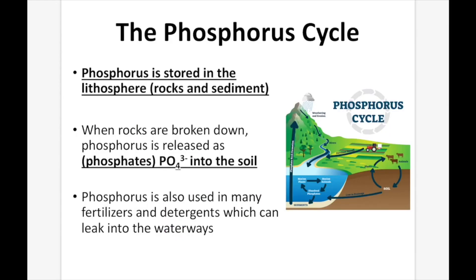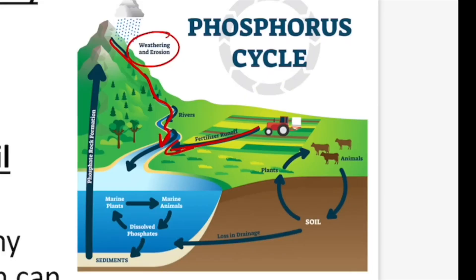The fourth cycle is the phosphorus cycle, where phosphorus is cycled between the biotic and abiotic environment. For the most part, phosphorus is stored in the lithosphere — rocks and sediment. When rocks are broken down, phosphorus is released as phosphates (PO4³⁻) into the soil. Phosphorus is also used in many fertilizers and detergents, which can leak into waterways. Through weathering, erosion, and fertilizer runoff, phosphorus makes its way into waterways, where it can be taken up by marine plants and animals, and eventually sent back into sediment.